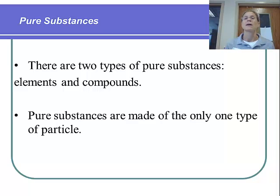We look at elements and compounds as pure substances, and pure substances are made of only one type of particle. By particle, that could be an atom or a molecule or a formula unit.